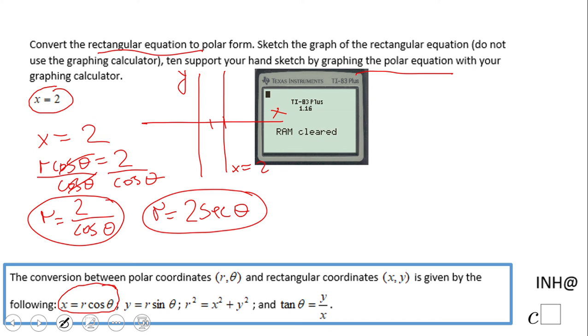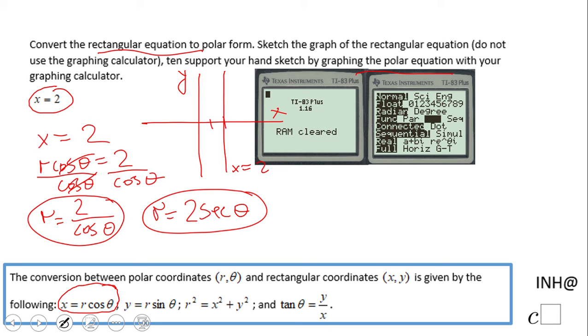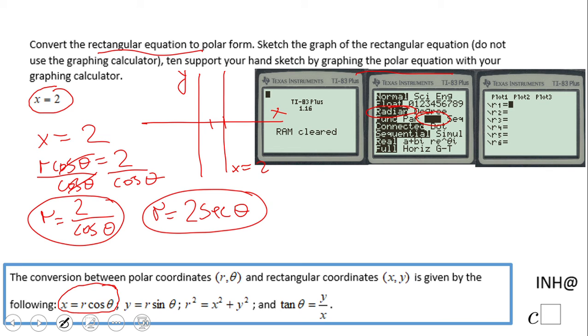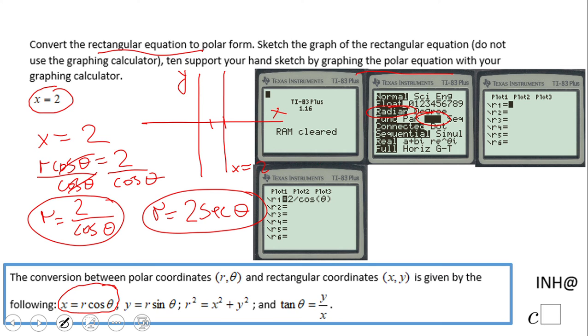I have a TI-83. You want to be sure you are in polar coordinates, you want to be sure you are in radians, and then you can click the graph button. On R1 I type in 2 over cosine. You see, in this TI-83 you have to do it this way.